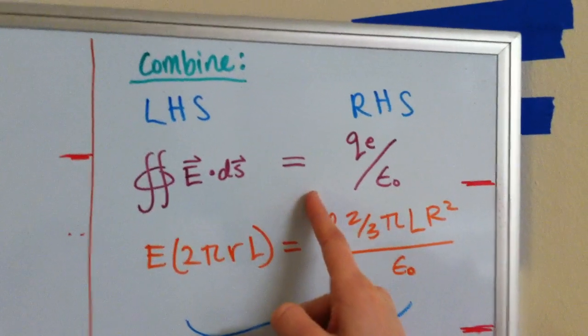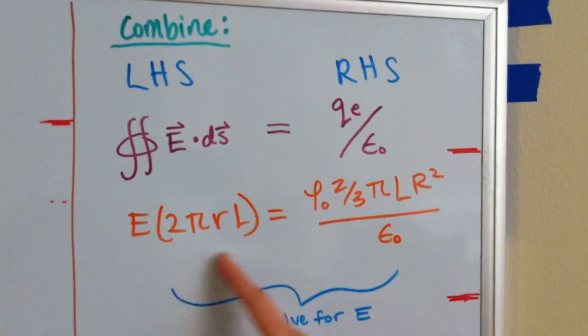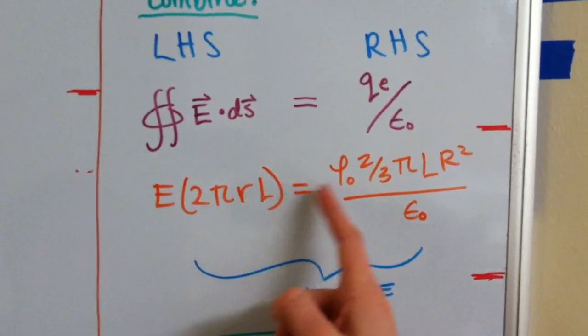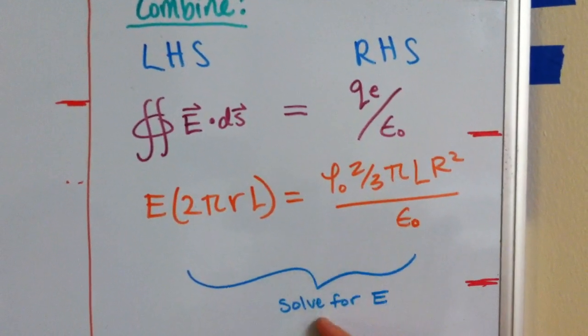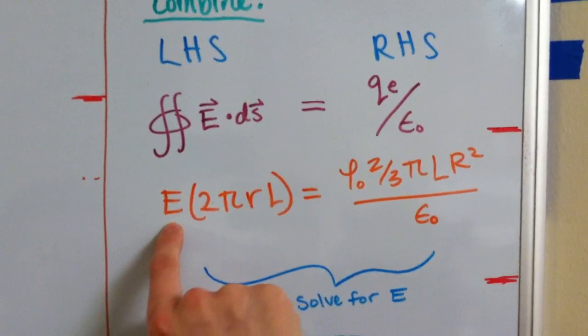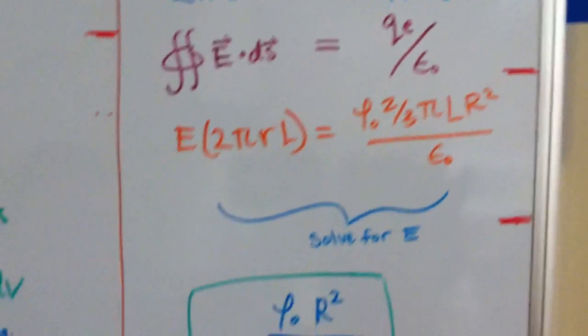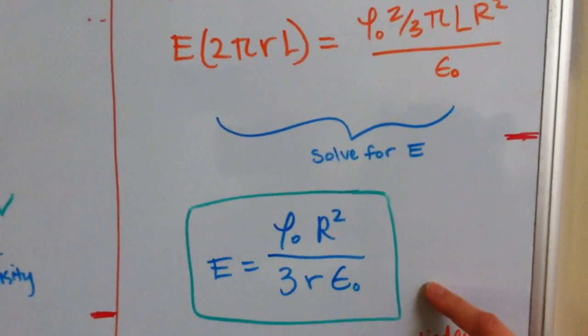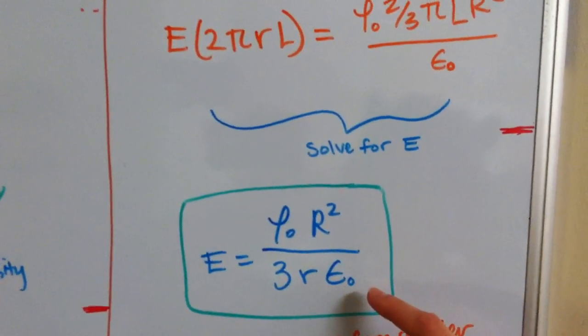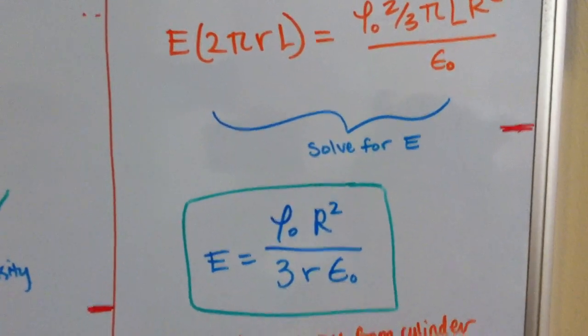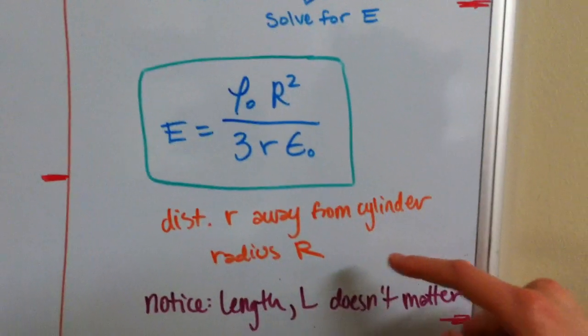So, next, what we're going to do is combine the left-hand side and the right-hand side of Gauss's law that we've solved for, and we get this equation, and you can see there's going to be some cancellations with 2 and π and L cancel, and we solve for the electric field here, which is what we're looking for, and we get that the electric field is equal to rho naught big R squared over 3 little r epsilon naught for the distance little r away from a cylinder of radius big R.